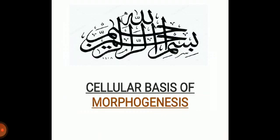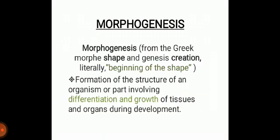The first thing is: what is a morphogen? A chemical agent which is able to cause or determine the morphogenesis is called a morphogen. Now the next question is: what is morphogenesis? Morphogenesis is derived from two Greek words — morph means shape and genesis means creation — referring to the growth of tissue or organ during development.